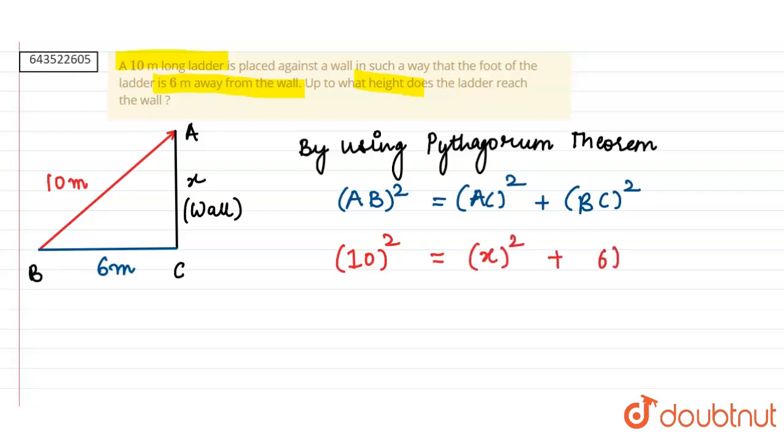This implies 100 equals x squared plus 36. This implies x squared equals 100 minus 36.